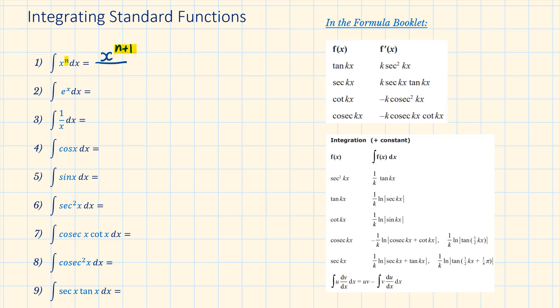For the power rule: add 1 to the power and divide by the new power. Questions 1 to 9 are indefinite integrals — they don't have any limits given, so we have to remember to add plus c, representing an unknown constant. Question 2: the integral of e to the power of x with respect to x is equal to e to the power of x plus c.